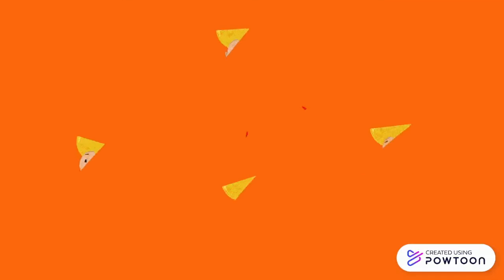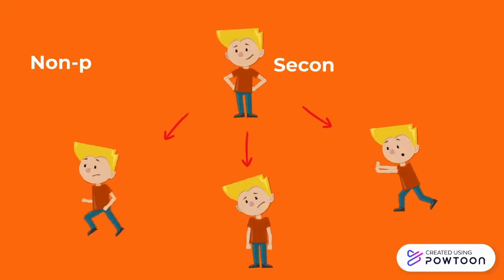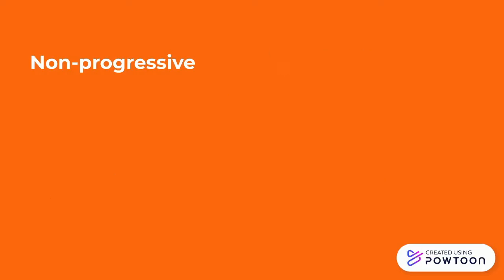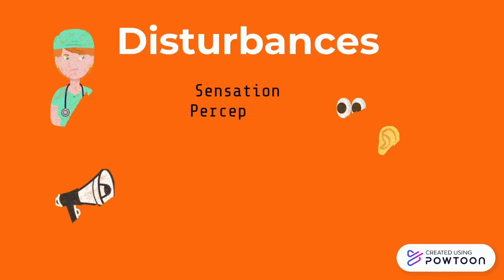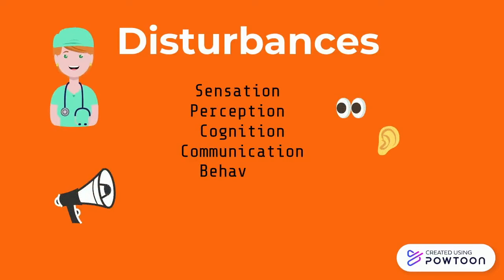All children with cerebral palsy have, by definition, motor impairment and difficulties with tasks involving motor performance. The clinical features of CP vary across a broad range of abnormalities. Although the initial neuropathologic lesion of CP is non-progressive, these children may develop secondary conditions over time that will variably affect their functional abilities. The motor disorders of CP are often accompanied by disturbances of sensation, perception, cognition, communication, behavior, epilepsy, feeding problems, and secondary musculoskeletal problems.